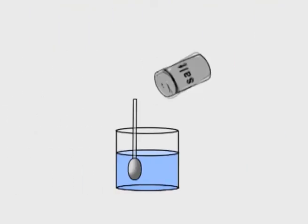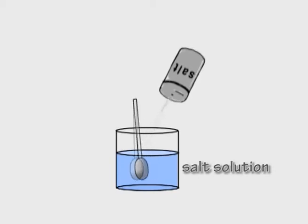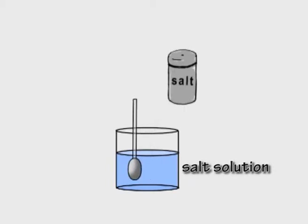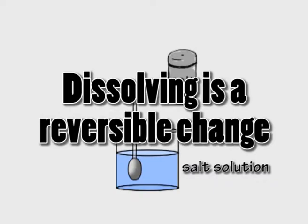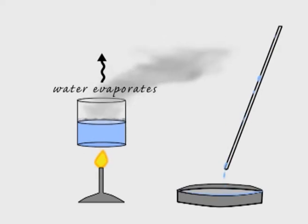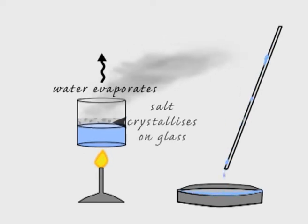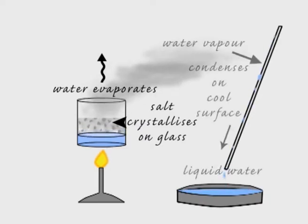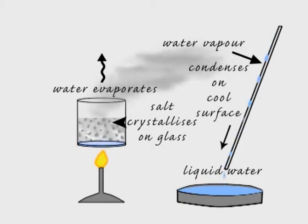If you mix salt with water, it will dissolve to form a salt solution. Dissolving is a reversible change because the water and salt can be separated by evaporating the water from the salt solution, leaving crystalline salt behind. The water vapor can be collected as it condenses on a cool surface to recover purified liquid water.